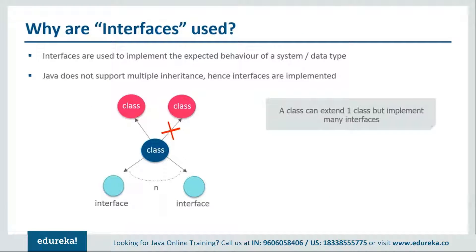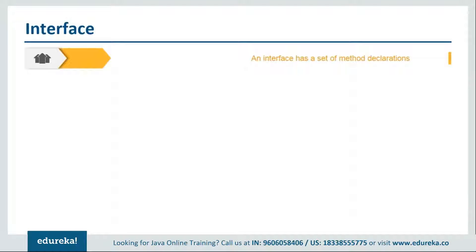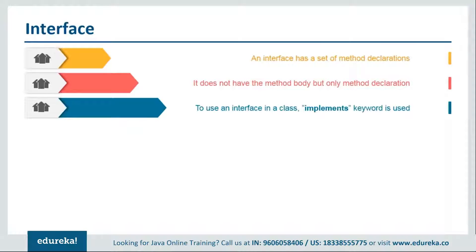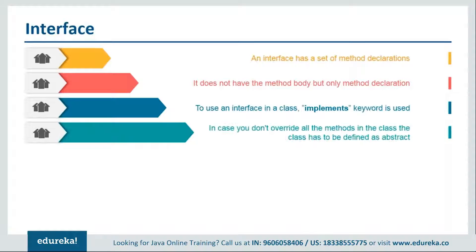Interfaces are used to implement the expected behavior of a system or a data type. Java does not support multiple inheritance, but it definitely supports multiple implementations of interfaces. A class can extend only one class, but it can implement various interfaces. An interface is nothing but a set of abstract method declarations — it does not need a method body. To use an interface in a class, we use the keyword 'implements'.